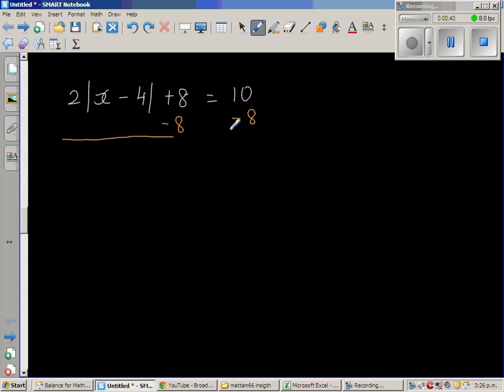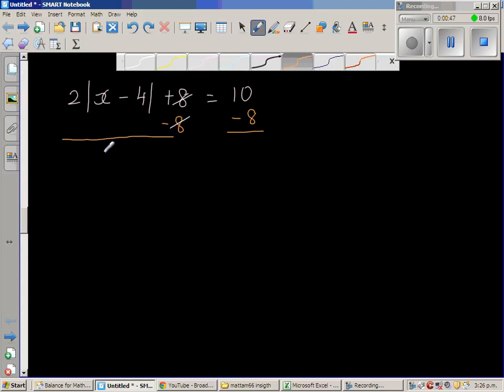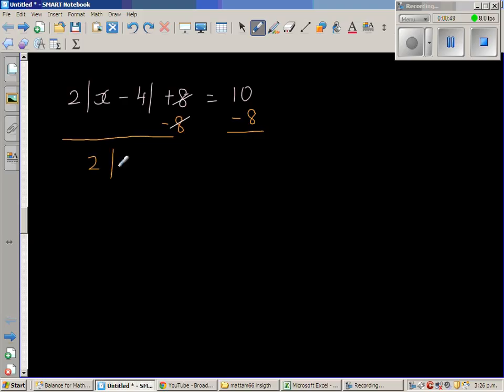Treat the equation like two sides of a balance. So what happens is this and this gets cancelled. So 2 times modulus of x minus 4 is equal to 10 take away 8 is 2.